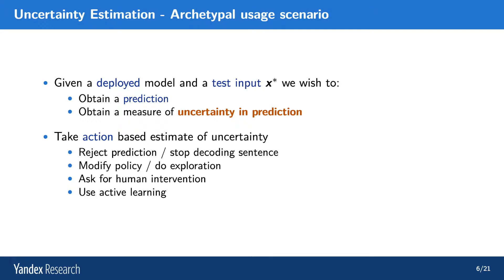The typical usage scenario for uncertainty is as follows. We have a deployed model, and it receives some kind of test input X — this could be audio, images, text, it doesn't matter. For this input, we'd like to obtain a prediction — the car drives somewhere, gives us the next word, or predicts the price of Bitcoin. Additionally, we'd like to obtain a measure of uncertainty in this prediction, which tells us how sure the model is that the prediction is correct. Based on the prediction and the estimate of uncertainty, we'd like to take an action: either reject or accept the prediction, stop decoding a sentence, modify our reinforcement learning policy, do extra exploration, ask for human intervention, or perhaps deploy active learning. The action really depends on the application of interest.